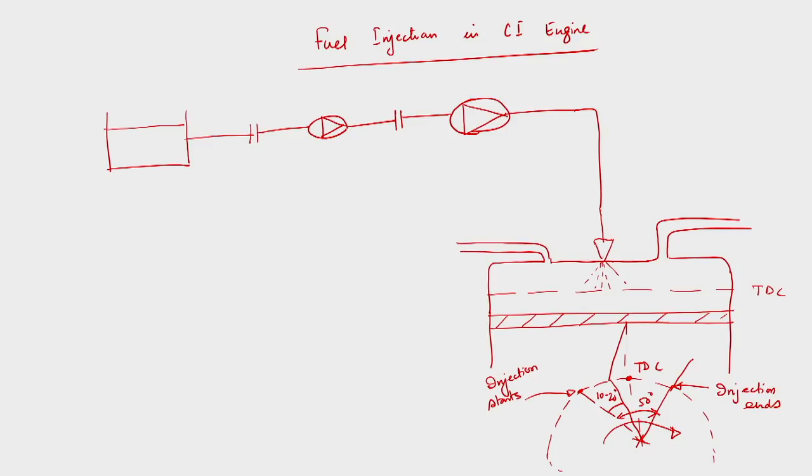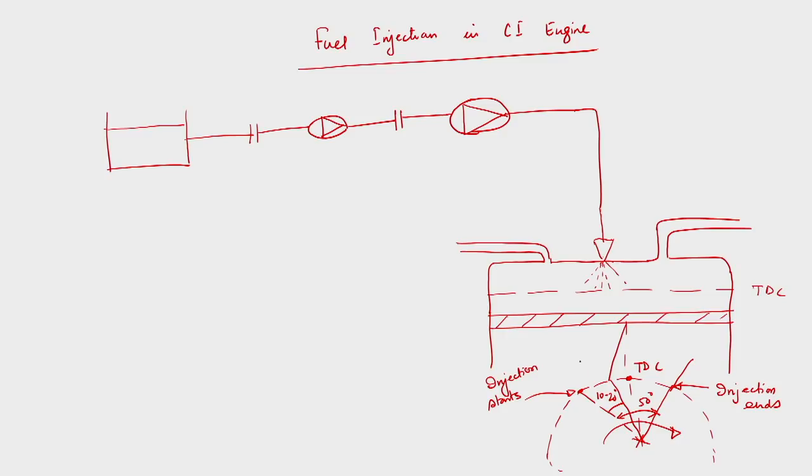The amount of fuel being injected into the cylinder during the first phase of combustion will complete the combustion as the piston is at TDC, and then the remaining part of the combustion will be completed. Fuel injection starts when the piston is 10 to 20 degrees below TDC and it continues until the total angle of fuel spray is around 50 degrees. This entire period is known as the injection period.